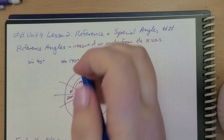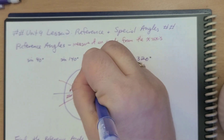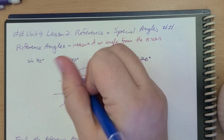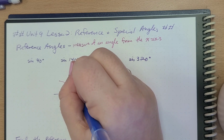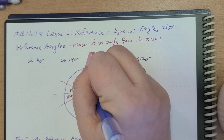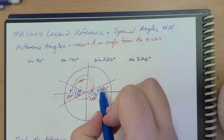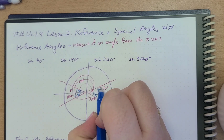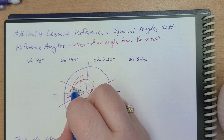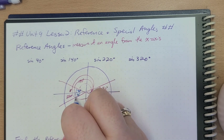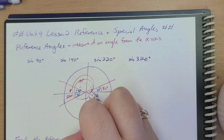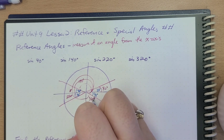What's our reference angle? Well, the reference angle here is still just 40 degrees. The reference angle here is going to be 40 degrees, the reference angle here is 40 degrees, and the reference angle here is 40 degrees. We can find that by subtracting: 40 to 0 is 40; 180 minus 140 is 40; and 180 plus 40 is 220.